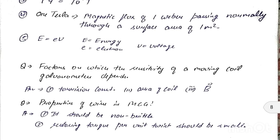A question: what are the factors on which the sensitivity of a moving coil galvanometer depends? Answer: torsion constant, area of the coil, and magnetic field. Another question: what are the properties of wire used in a moving coil galvanometer? You can put answers in the comments and discuss.